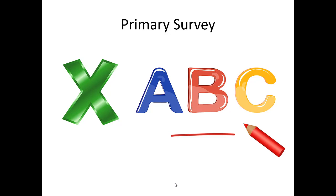To review XABC: X is for exsanguinating hemorrhage, A is for airway, B is for breathing, C is for circulation — those are your top four priorities. If you're using the MARCH acronym, it's essentially the same thing: M stands for massive hemorrhage, A is for airway, R is for respirations, C for circulation, and H for hypothermia or hypotension, which we'll talk about a little bit later.